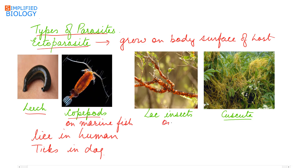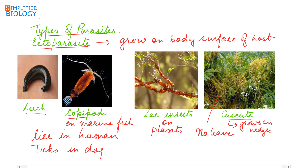Other examples include lac insects on plants, and Cuscuta, which is a parasitic plant that grows on hedges. As you can see, Cuscuta has no leaves and no chlorophyll, as it derives its nutrition from the host plant.